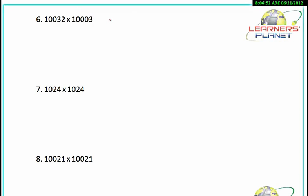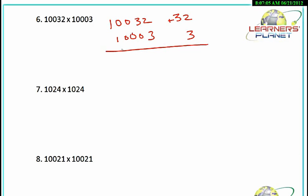In this question, 10032 into 10003: it is 32 more than 10,000 and 3 more than 10,000. Let's multiply: 32 into 3 is 96. With this multiplication we have to fill up four zeros since there are four zeros in 10,000, so we put two more zeros there. Then we just add 10032 plus 3 is 10035. Isn't it very simple?